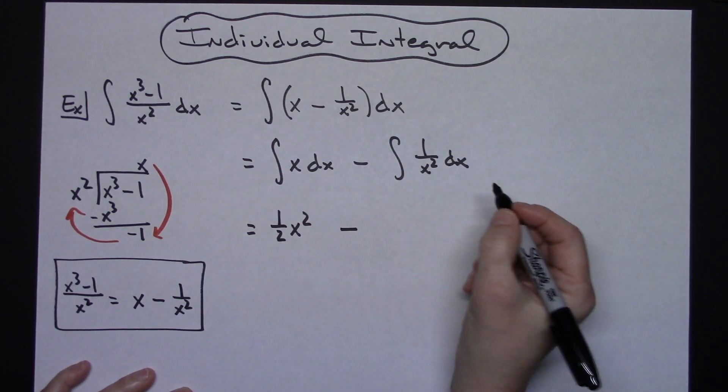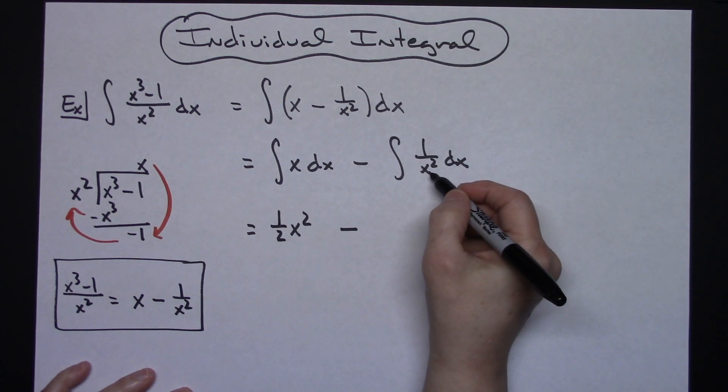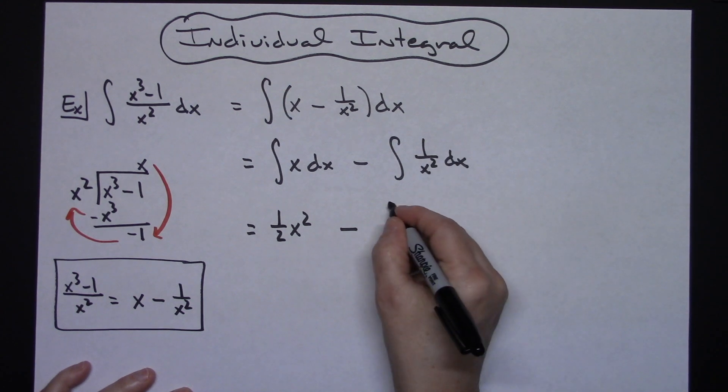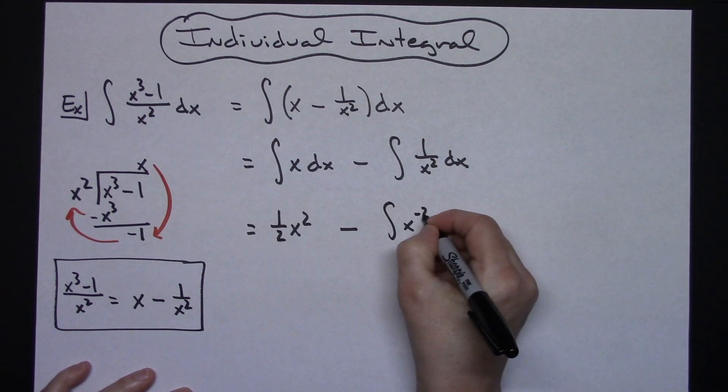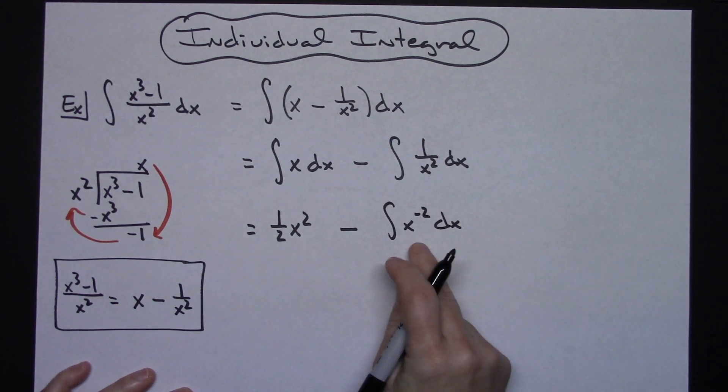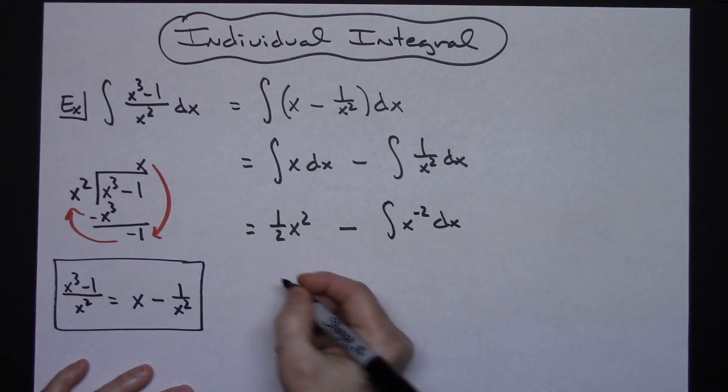The minus sign will be right there. Now on this one, before I do it, I'm going to use my laws of exponents. Move that to the top and make this the integral of x to the negative 2 dx. That will allow me to integrate that very easily.